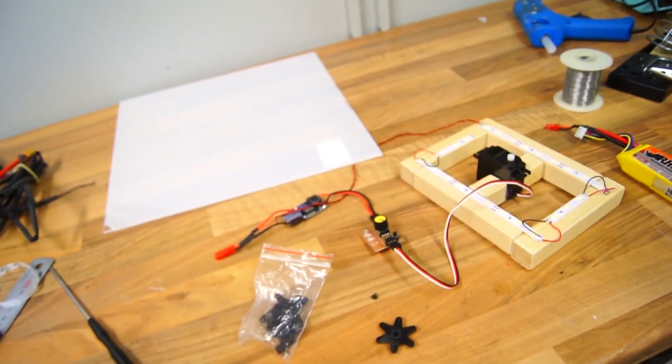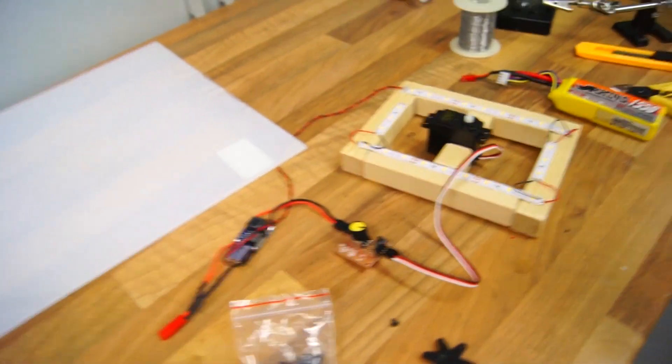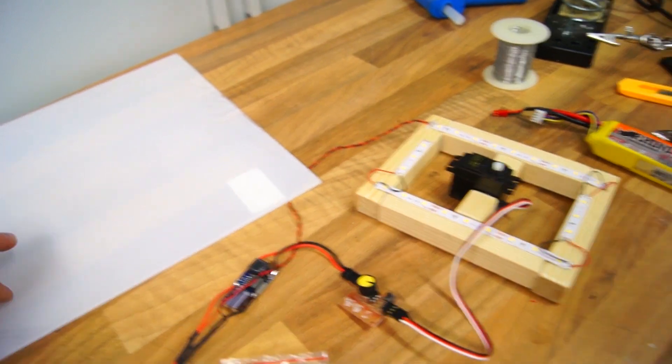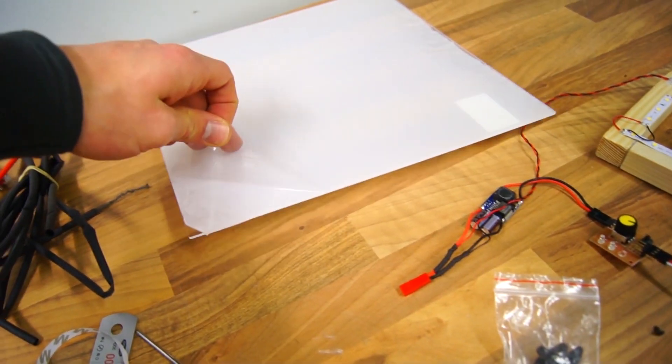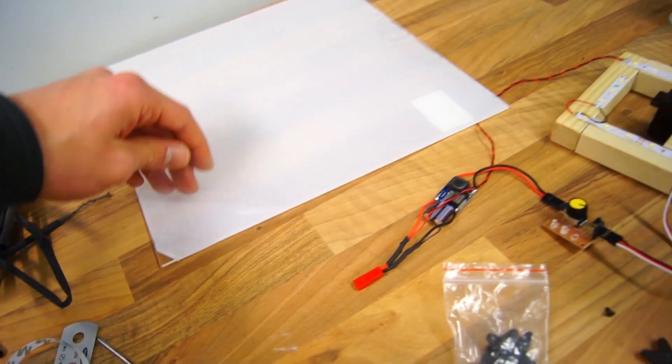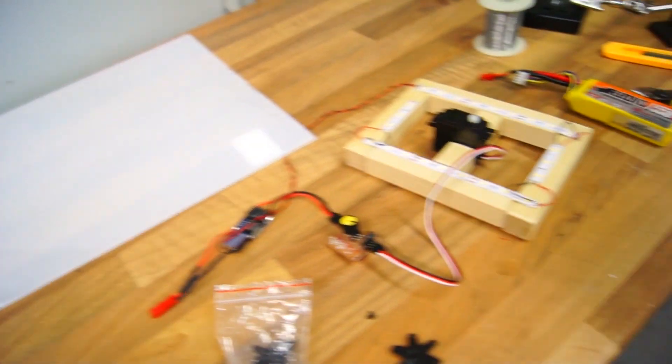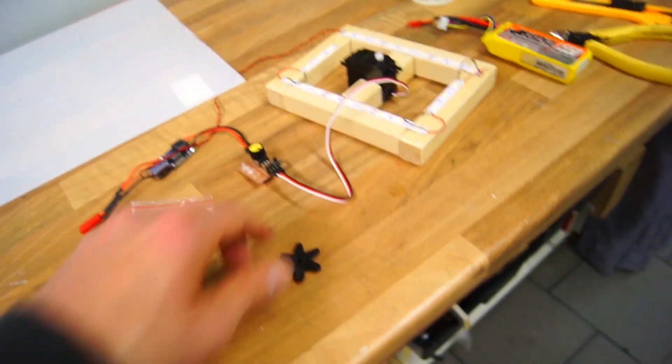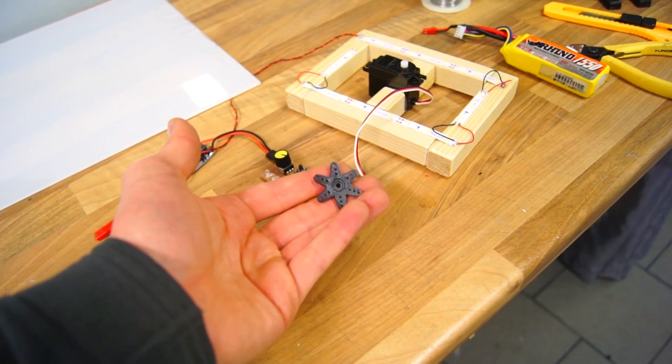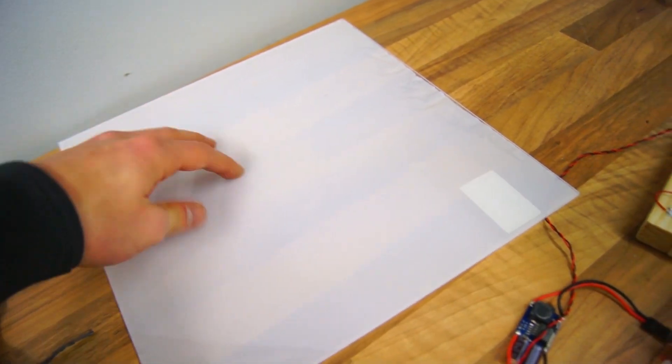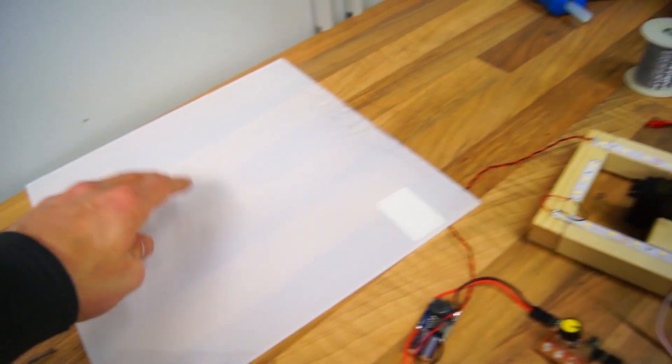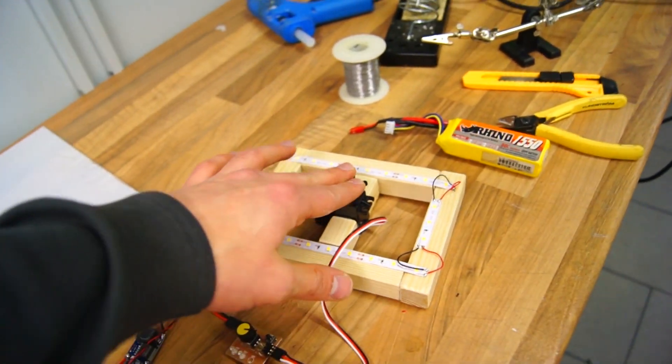All right good job we are almost done actually. It's not that much left of the build but what I have here is a sheet of plexiglass and that's going to be the spinning table. So what we are going to do is we are going to take the servo horn that is included with the servo, we are going to press it on and now we are going to mark the center of this square and we are going to glue it onto the servo.